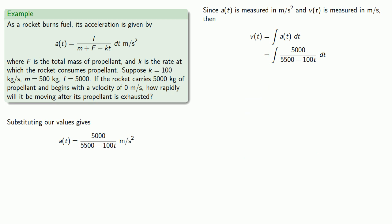We'll use a U-substitution with U equals 5500 minus 100T. This gives us... And making our substitution, we can find the anti-derivative.